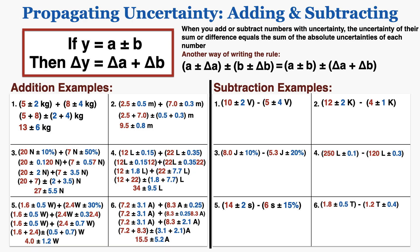In subtraction number 1, 10 plus or minus 2 minus 5 plus or minus 4 is equal to 10 minus 5, plus or minus the sum of the absolute uncertainties — so that's 5 plus or minus 6. In number 2, I follow the same rule where I subtract the numbers but add their absolute uncertainties, and the result is 8 plus or minus 3.